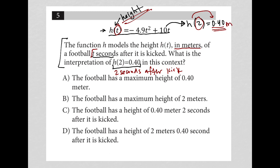So which one of these answer choices matches our interpretation of the question? Choice A says the football has a maximum height of 0.40 meters. No, that's not exactly what this is saying. It's not saying that 0.40 is as high as it will go, so that's gone.